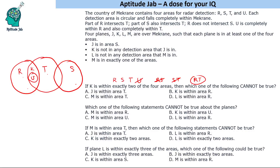So K is in the R-and-T overlapping area. Now which cannot be true? J is within area T — that cannot be true because J and K cannot be in the same area, and K is already in T. The other options: K within area R — yes, we know K is in R. M within area T — possible. L within area R — possible, with J placed elsewhere.